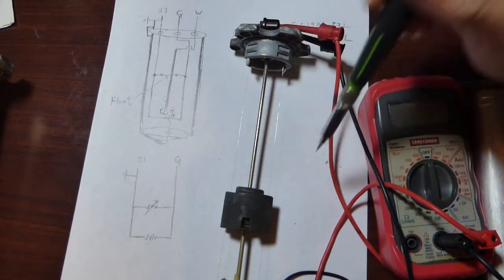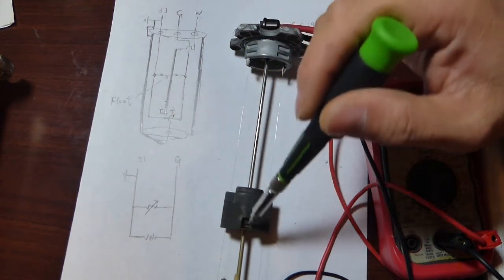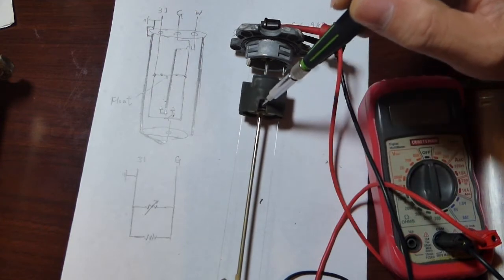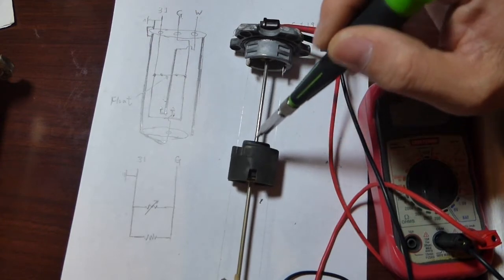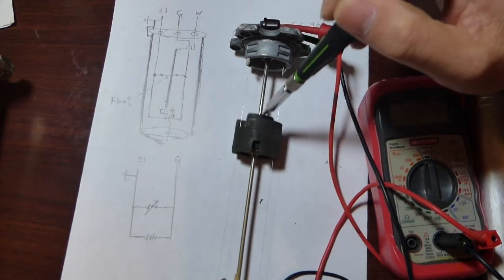Between these wires, there's a float, and the float basically fluctuates along with the fuel level.